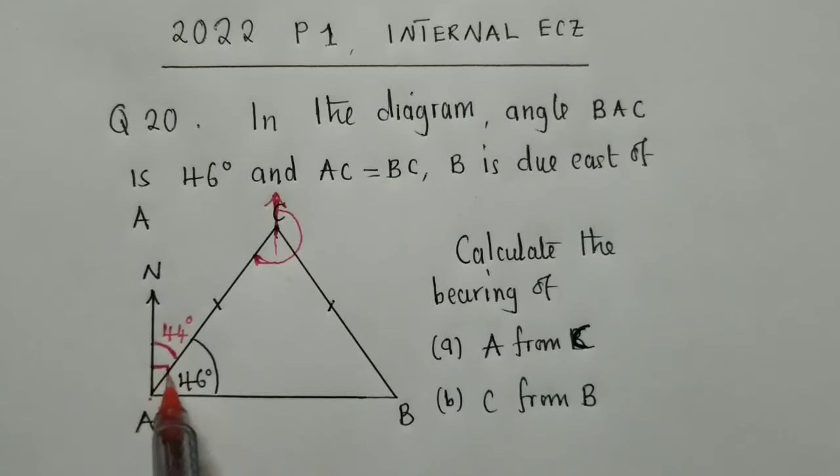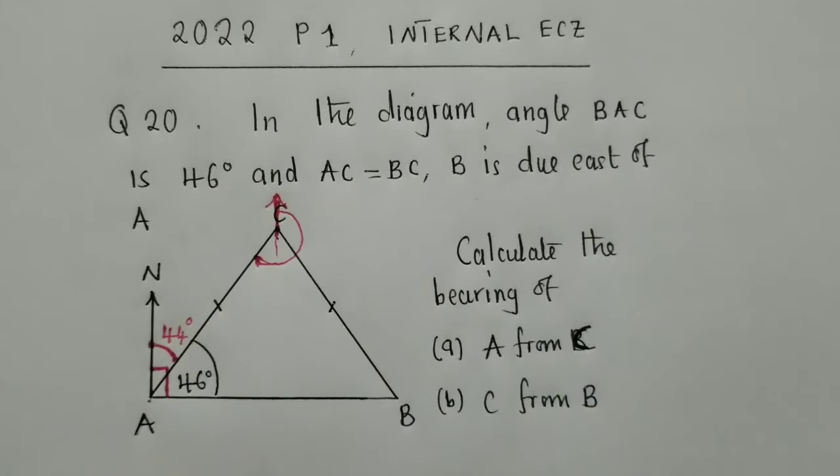This will simply be 44 degrees. Because we know that it's 90, 90 minus 46, it will give us 44. The angle now from here to here is 44 degrees.